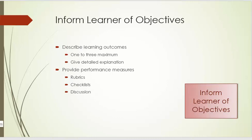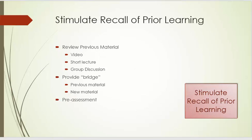The second level is to inform learners of objectives. To do this, we describe the learning outcomes. We have no more than one to three learning outcomes, and we give a detailed but short explanation of each learning outcome of no more than one or two sentences. We then provide performance measures: rubrics, checklists, and discussions.